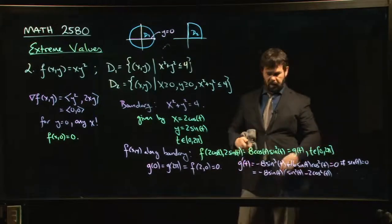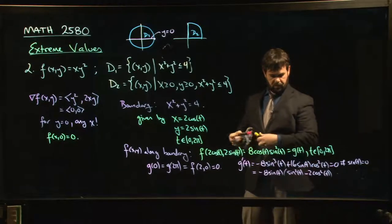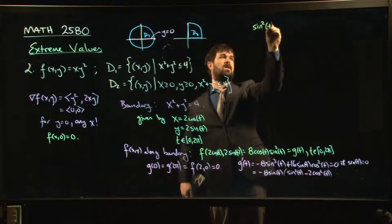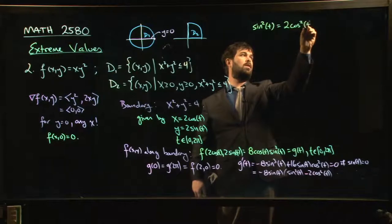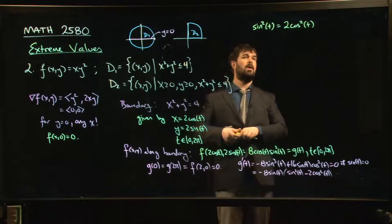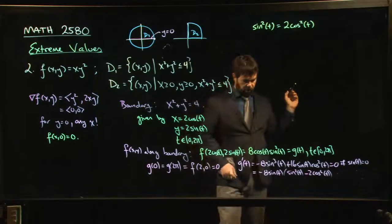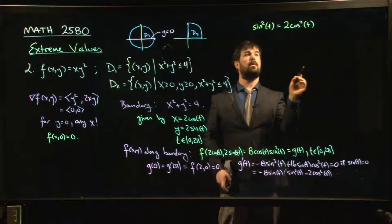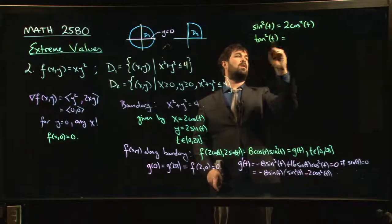So either sine t is equal to 0. We know that doesn't get us anything new. So we've got to look at this one. So what happens? Let's do it up here where I've got a little bit more room. What happens if sin squared t is equal to 2 cos squared t? What do we get then? Well, if I divide both sides by cos squared, because cos can't be 0 because sine and cos can't be 0 at the same time. So tan squared t is equal to 2.